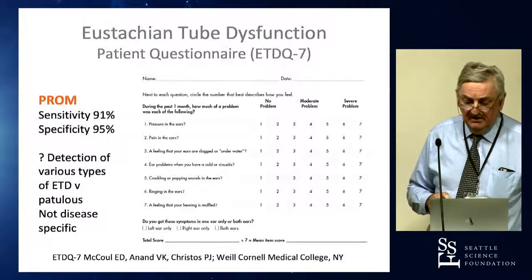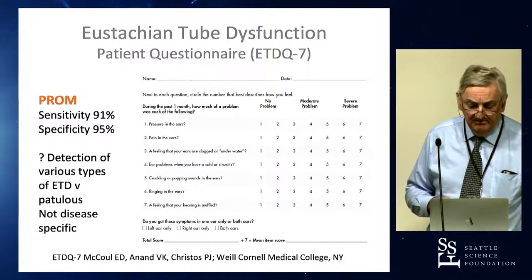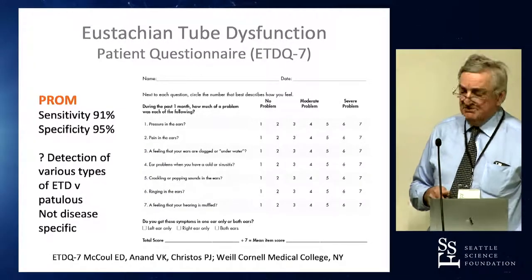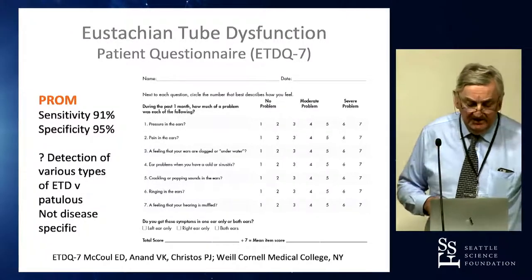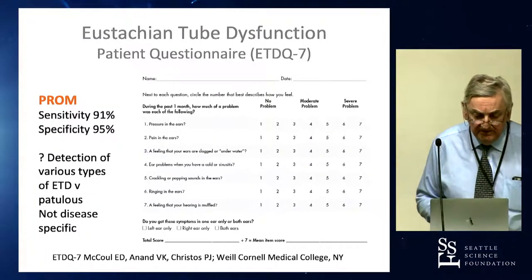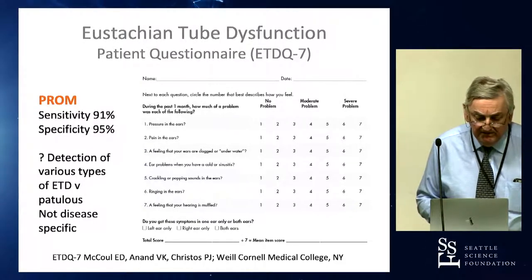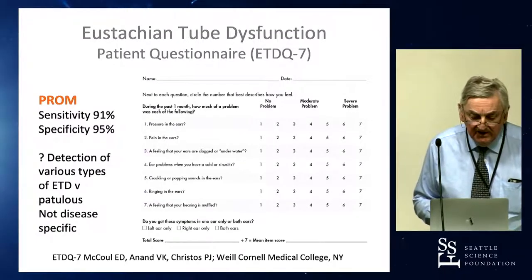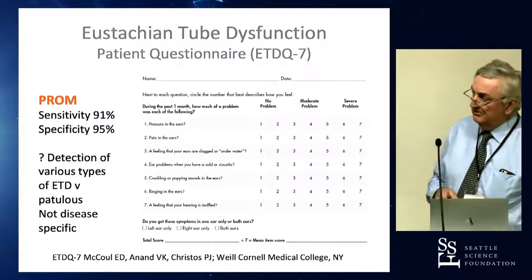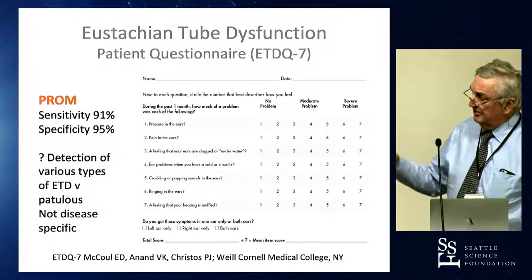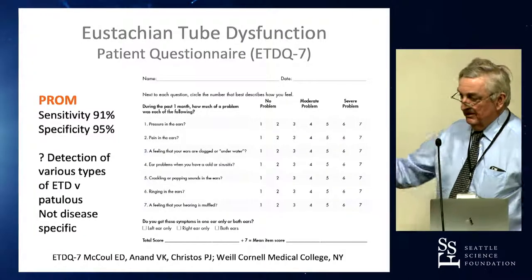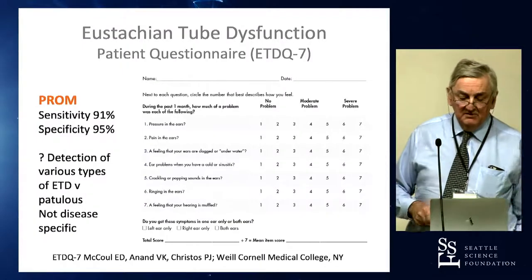In 2011, the Eustachian Tube Dysfunction Questionnaire — the ETDQ-7 — covers seven symptoms: pressure in the ears, pain in the ears, feeling your ears are clogged, ear problems when you have a cold or sinusitis, crackling or popping sounds, ringing in the ears, and feeling that your hearing is muffled. You add them all up, divide by seven, and you get the ETDQ-7.